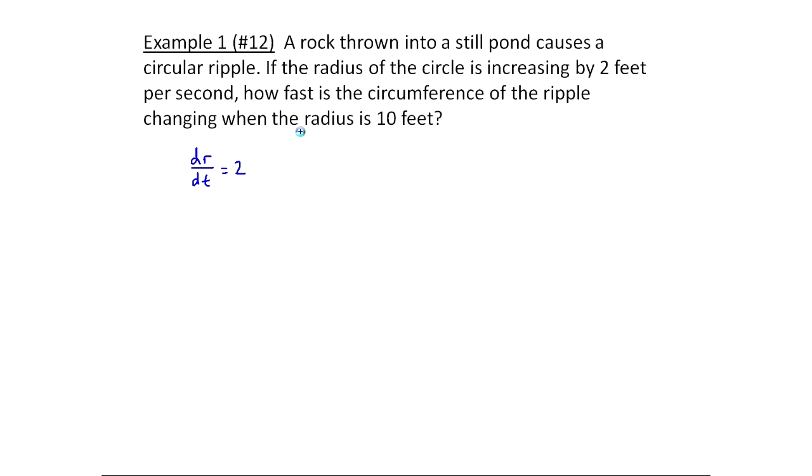Now it says how fast is the circumference of the ripple changing. Circumference I could call c, so it's saying what is the rate of change, so dc/dt, when the radius is 10 feet. This is the breakdown of the information we're given, and that's one of the first things you've got to do with these problems.